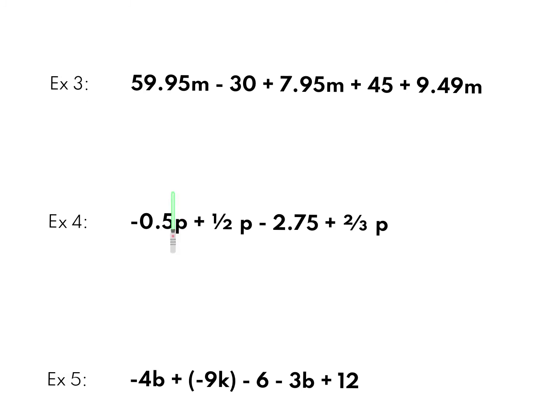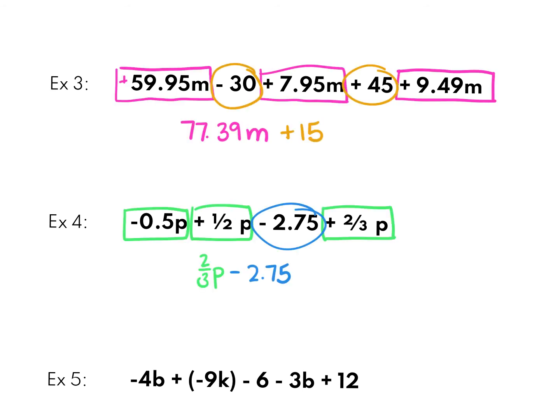A few more examples here. Nothing changes when you have decimals or fractions. You treat them the same way and you can use your calculator. So I want you to try 3 and 4. When I combined my m's here, I got 77.39m and then negative 30 plus positive 45 is positive 15. Now right here when I took negative 0.5 plus 1 half, those two canceled each other out. So I just kept my two-thirds p minus 2.75.